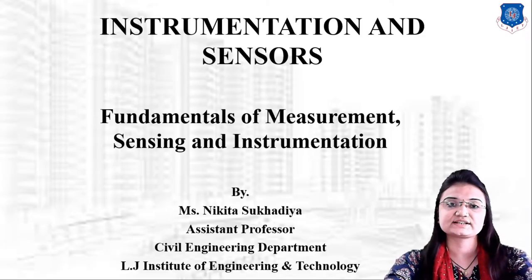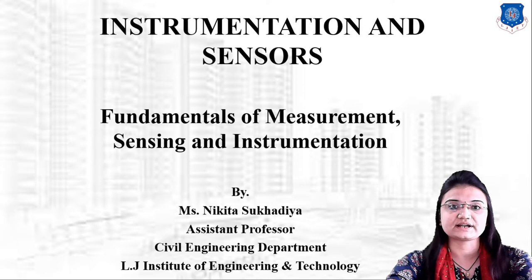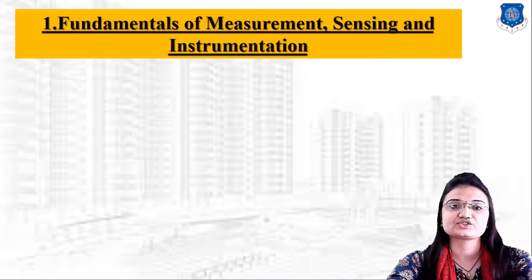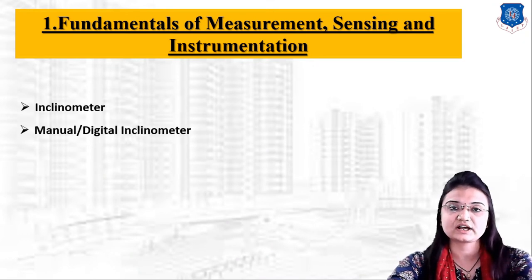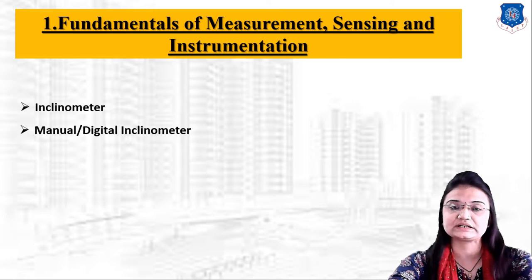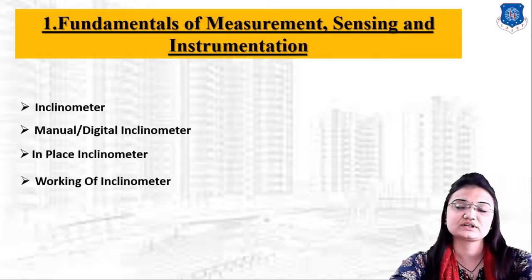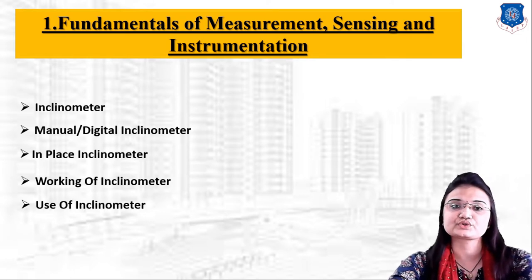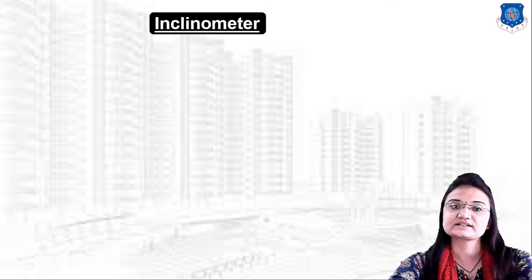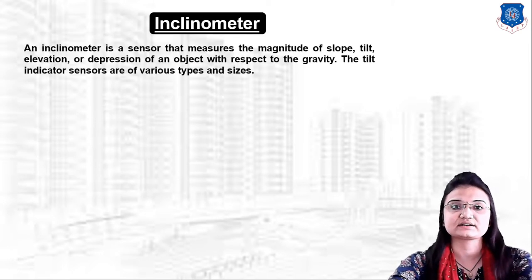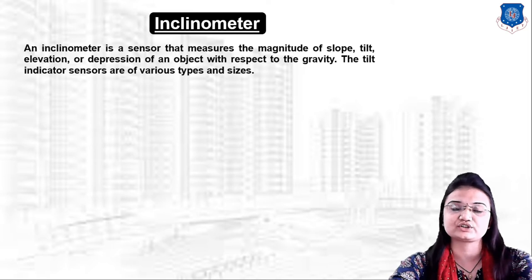Hello students, welcome to the lecture series of Instrumentation and Sensing. Today we will continue Chapter 1, Fundamentals of Measurement, Sensing and Instruments. In the previous lecture we studied about speed, and in this lecture we will learn about what is an inclinometer, its types, working, and uses. An inclinometer is a sensor that measures the magnitude of slope, tilt, elevation, or depression of an object with respect to grade.